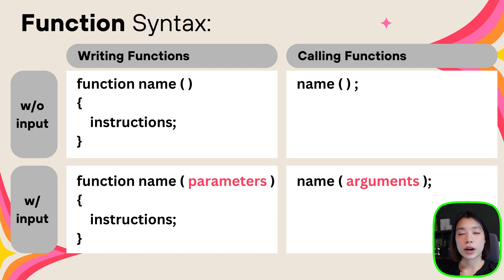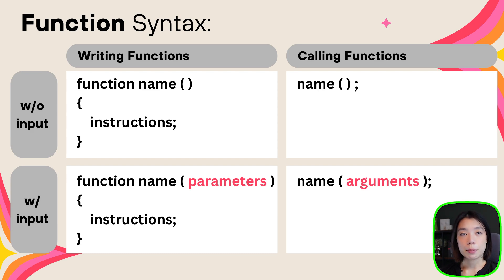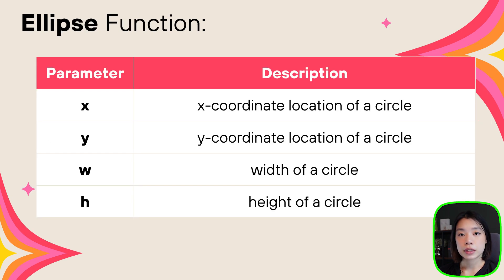Now let's talk about the second type. For functions that require inputs, you need to put values within the parentheses. For writing functions, we call these values parameters, while for calling functions, we call these arguments. The number of inputs really depends on what's suitable for the function you're writing. An example of a function that requires inputs is an ellipse function, which requires three or four parameters or arguments: x, y, w, and h.